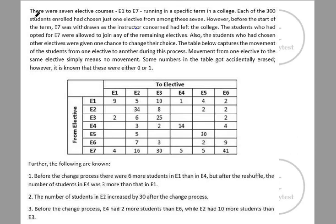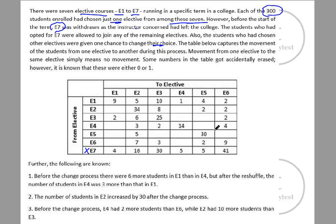There are seven elective courses e1 to e7 running in a specific term in a college. Each of the 300 students had chosen just one elective from these seven. However, before the start of the term, e7 was withdrawn as the instructor concerned had left the college. Students who had opted for e7 were allowed to join any of the remaining electives, and students who had chosen other electives were given one chance to change their choices. The table captures the movement of students from one elective to another during this process.